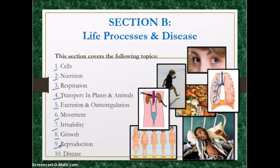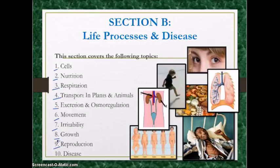Topic nine is reproduction, broken down into human reproduction and flowering plant reproduction. In humans, you should know your male and female reproductive systems, the menstrual cycle, and birth control methods. For flowering plants, know the structure of the flower, the pollination process that leads to double fertilization, the seed and fruit structure, and the different seed and fruit dispersal methods.